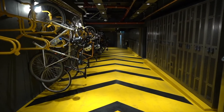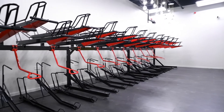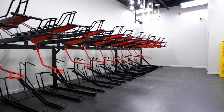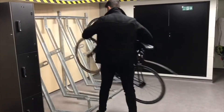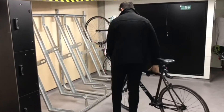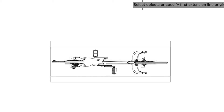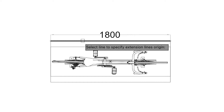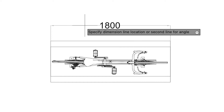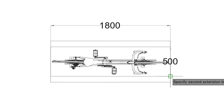This envelope does not account for non-standard bicycles such as cargo bikes. From this data we can begin to determine the space required for the various methods of parking a bike. In its most basic form there are only three ways to park a bike: horizontally, vertically, and double stacked.